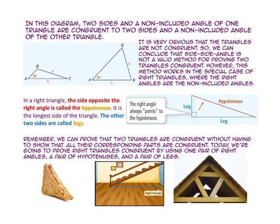In a right triangle, the side opposite the right angle is called the hypotenuse. It is the longest side of the triangle. The other two sides are the legs.